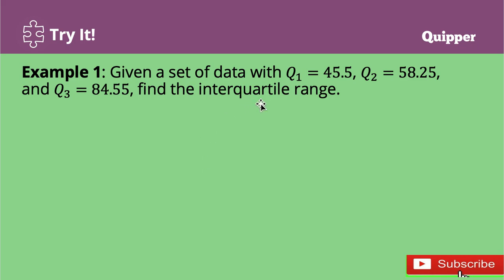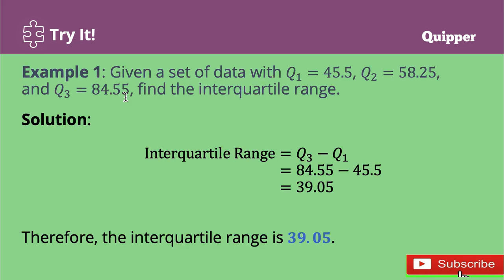Let's try some examples about the interquartile range and quartiles of ungrouped data. Example number one: given a set of data with Q1 = 45.5, Q2 = 58.25, and Q3 = 84.55, find the interquartile range. To find it, we substitute into the formula: 84.55 − 45.5 = 39.05. Therefore, the interquartile range is 39.05.